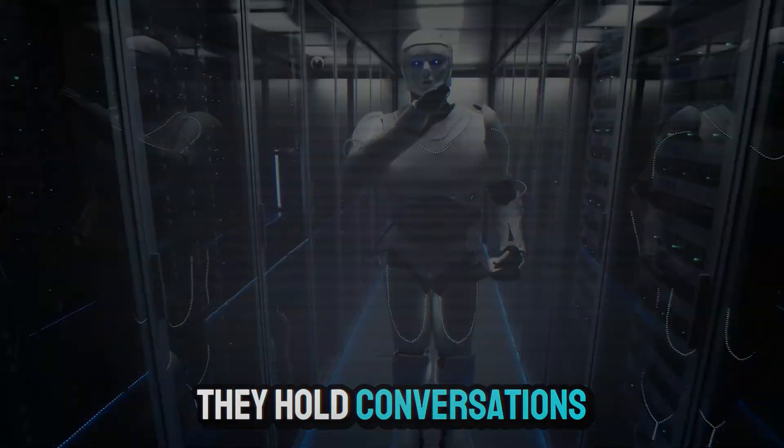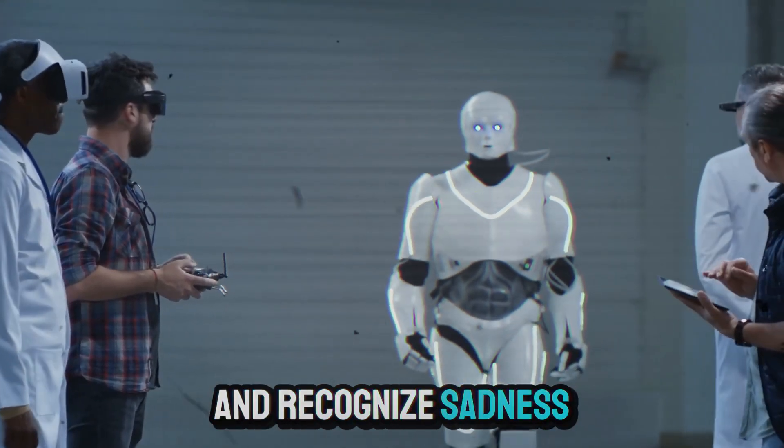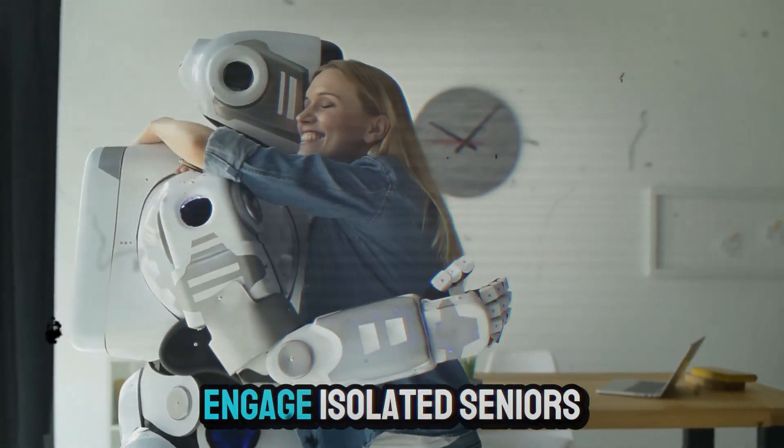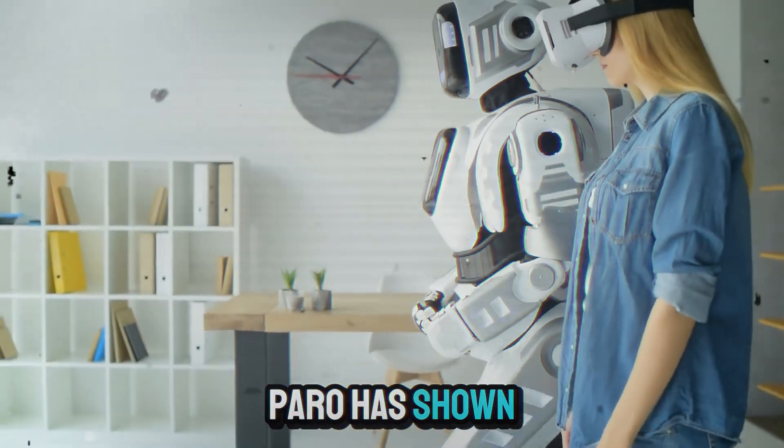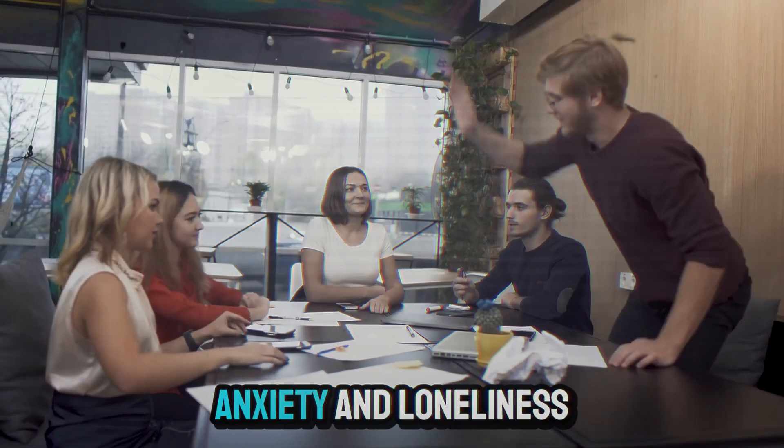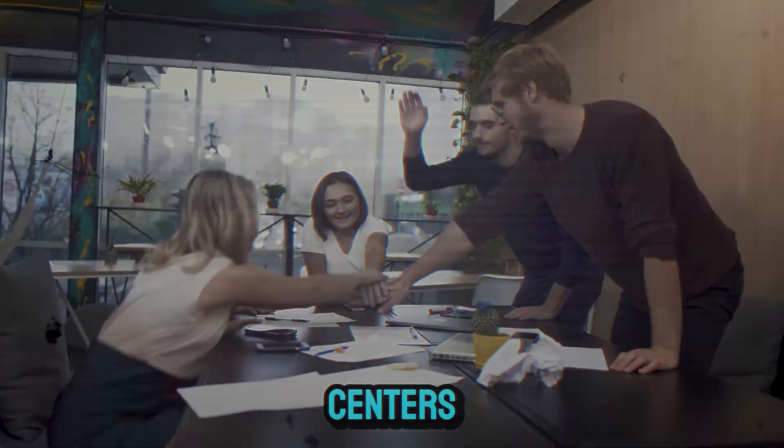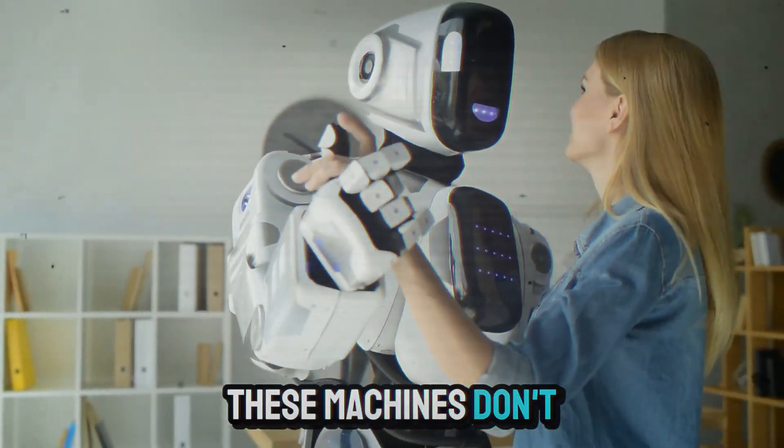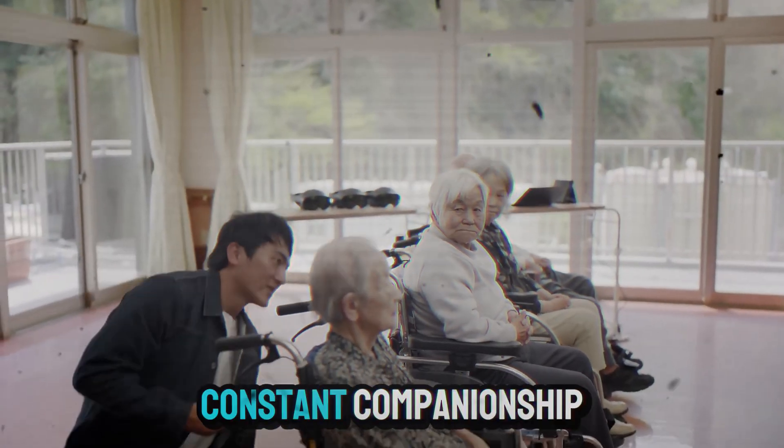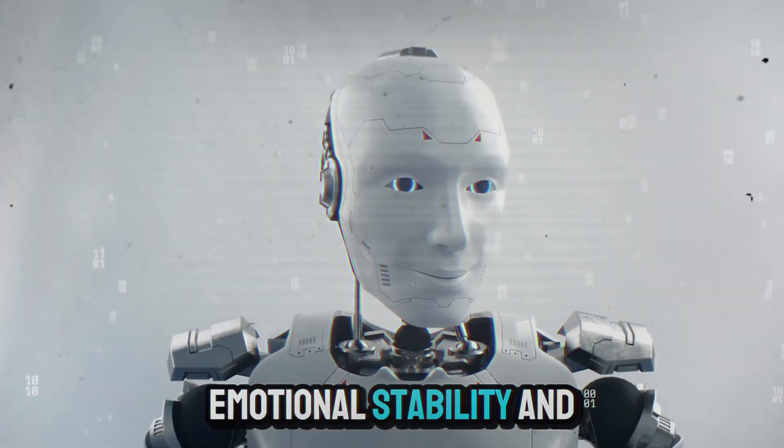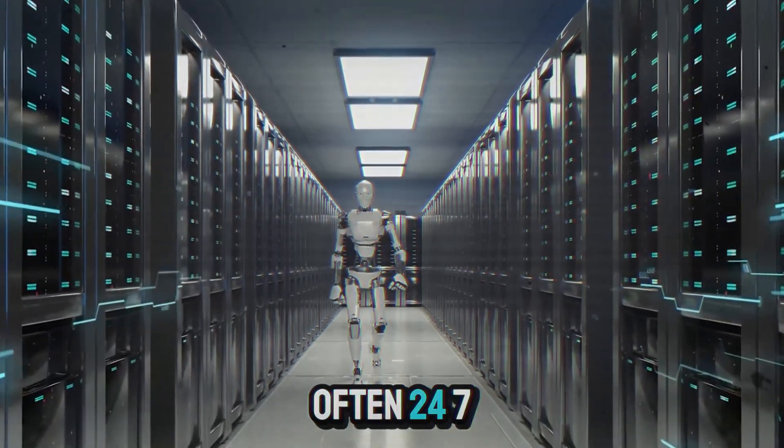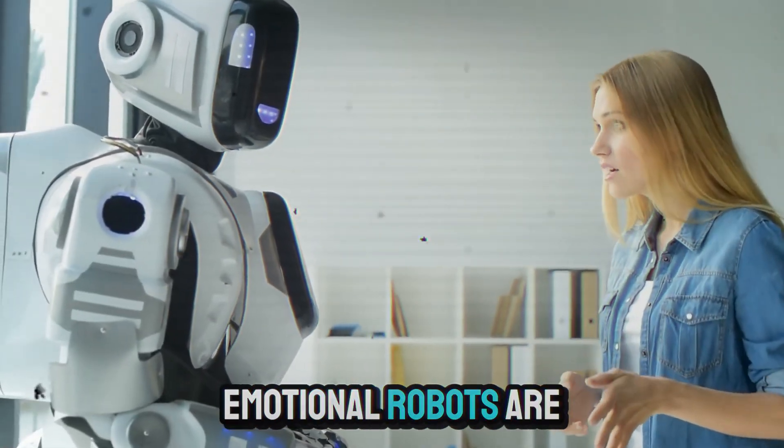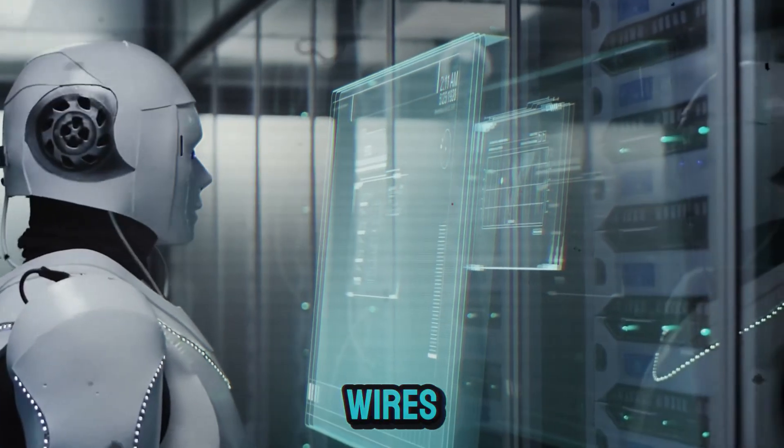They hold conversations, detect changes in voice tone, and recognize sadness or withdrawal. Some even sing songs, tell jokes, or share stories to engage isolated seniors. Paro has shown measurable success in reducing depression, anxiety, and loneliness in elderly care centers. EliQ tailors conversations to each user's mood and memory. These machines don't replace human touch, but they provide constant companionship, emotional stability, and cognitive stimulation, often 24-7. In a world with aging populations and caregiver shortages, emotional robots are quietly filling a critical gap, with warmth, not wires.